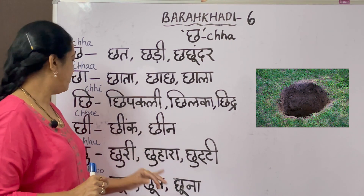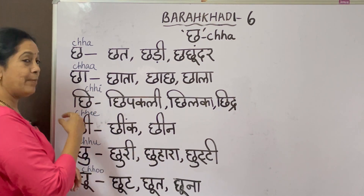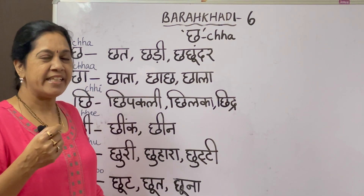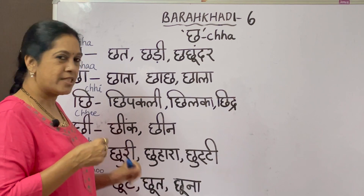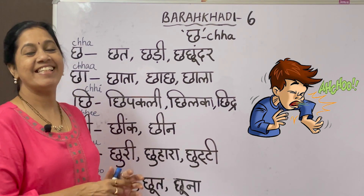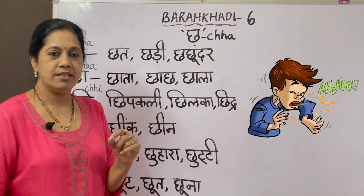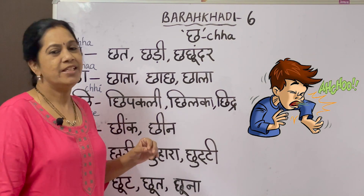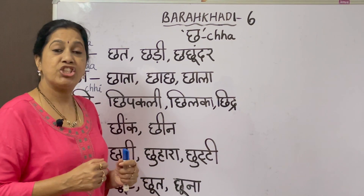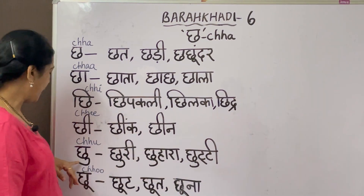The next letter is 'chi' - a lengthy double-E sound. 'Cheek' means sneeze. Some people also say 'chink.' Both are correct - it means to sneeze. The next one is 'chin' - chin means to snatch something.